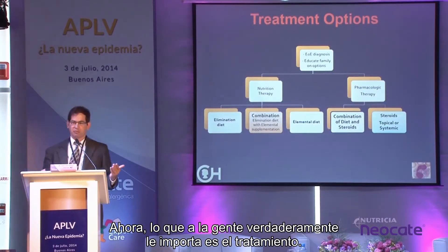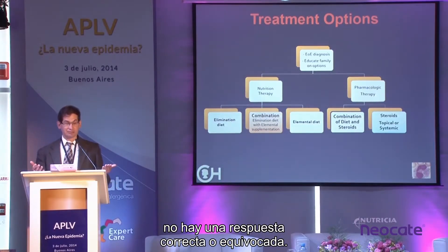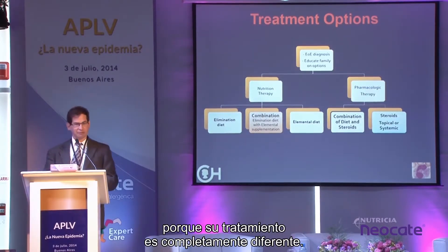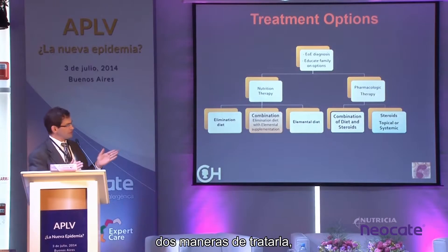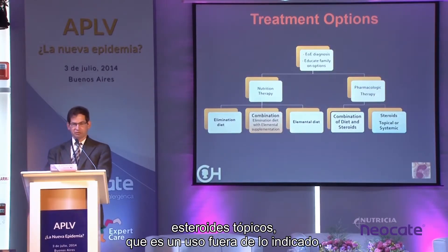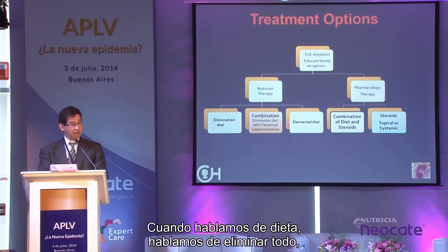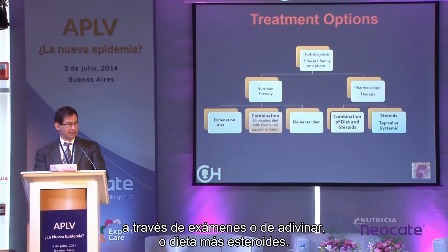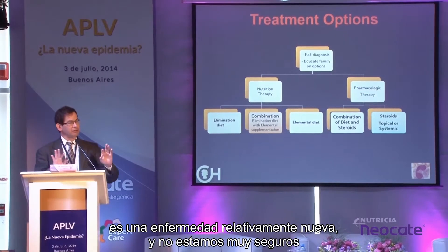When it comes to treatment, there's no single right answer. First, make sure you have the right diagnosis and rule out reflux. There are essentially two ways to treat EOE: topical steroids — which is an off-label use — or diet. You can also do a combination. Diet options include eliminating everything with amino acid formula, eliminating some things empirically or by testing, or combining diet with steroids. We're a newer field and not entirely sure what the right answer is.